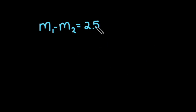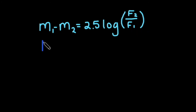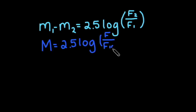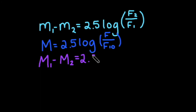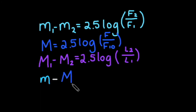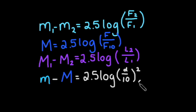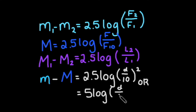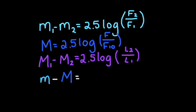Just to review: apparent magnitude is derived from a ratio of fluxes. Absolute magnitude is what the flux of an object would be at a fixed distance of 10 parsecs. We can convert between apparent and absolute magnitudes using the distance modulus. And the absolute bolometric magnitude is derived from a ratio of luminosities. Thanks for watching, and feel free to check out more videos on my channel for astro-related content.